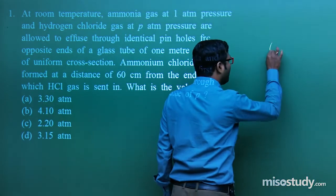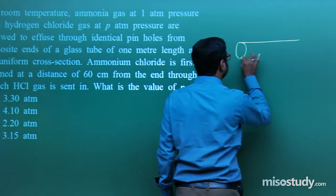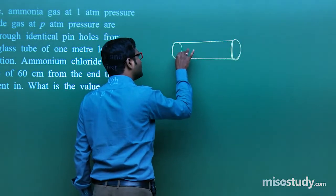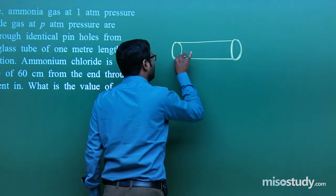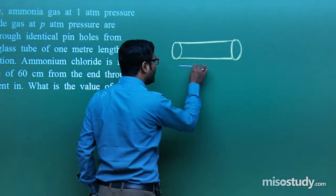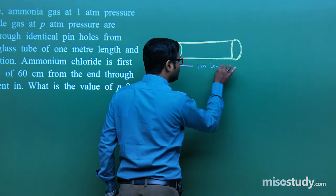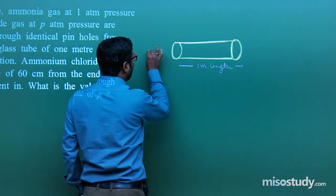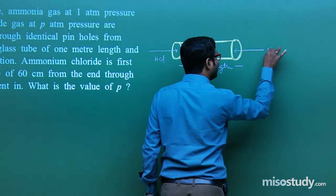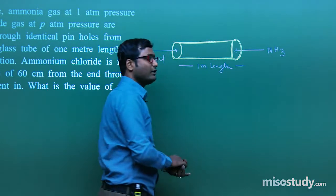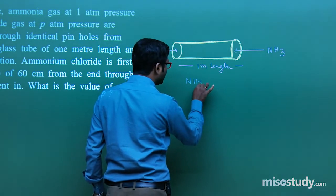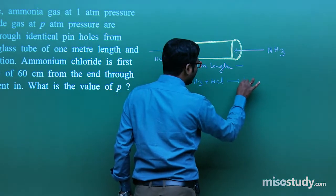Let me draw the glass tube. This is the glass tube and it is of 1 meter length. From one side, HCl enters and from another side, NH3 enters. As we all know, when NH3 and HCl combine, then definitely a reaction takes place, forming NH4Cl.